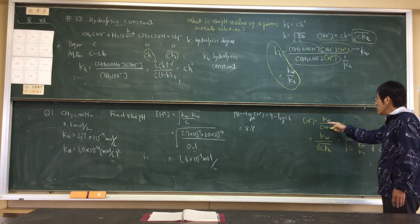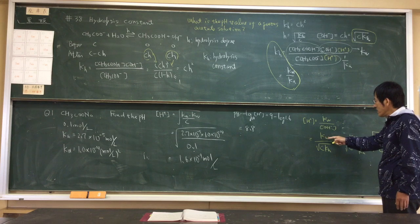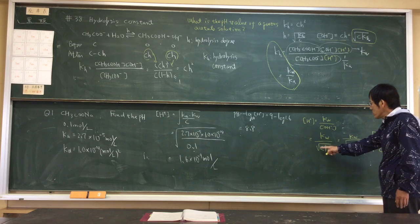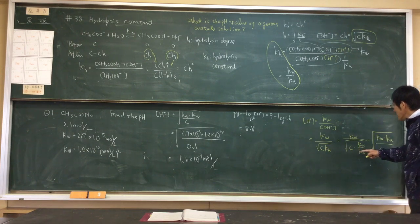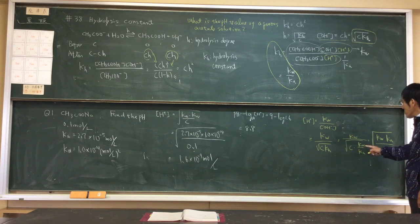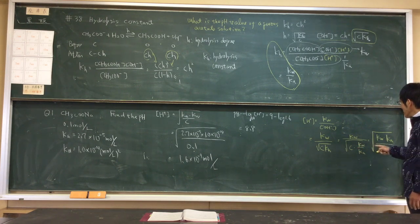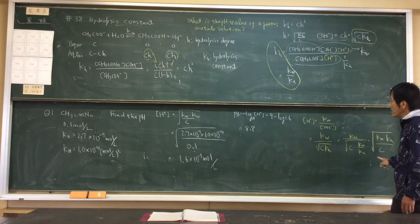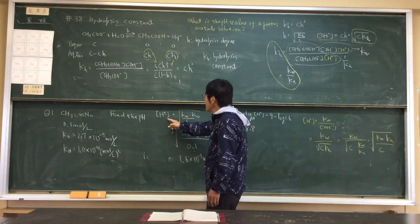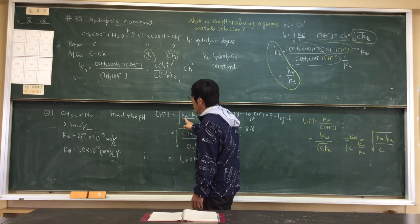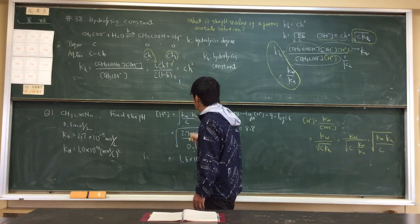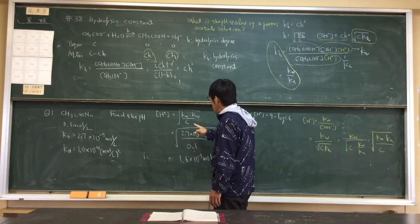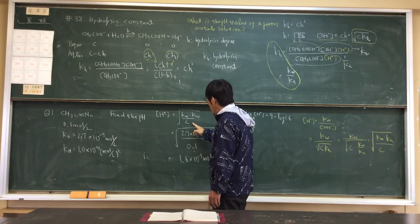H plus equals KW over OH minus, which equals the square root of KH times C, or the square root of KW times Ka over C. Using this formula with Ka equals 2.7 times 10 to the minus 5, KW equals 10 to the minus 14, and C equals 0.1 molar.